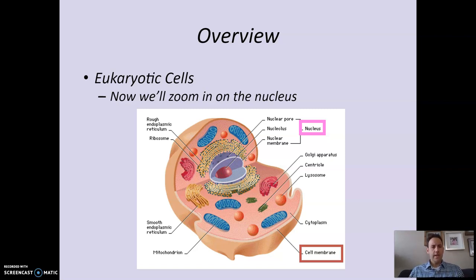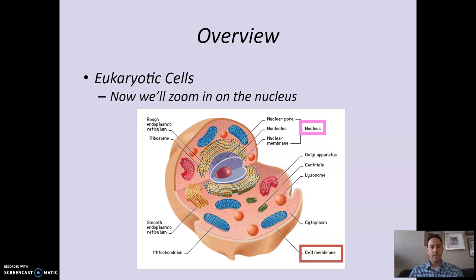So we've been looking at the eukaryotic cell for the last several units. We began by looking at cells in general, then zoomed in on different organelles — the cell membrane, focusing on how materials are transported through diffusion, osmosis, active transport, exo/endocytosis, et cetera. Then we zoomed in on the mitochondria and chloroplasts and looked at how cells produce energy. Now we're going to zoom in on the nucleus.